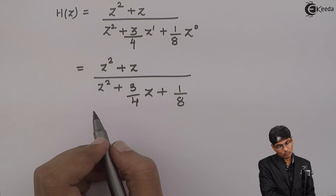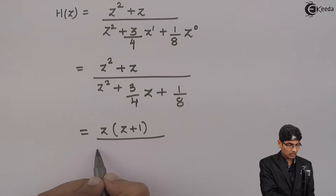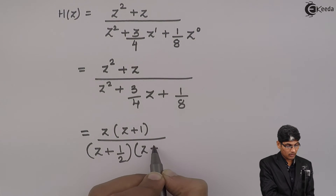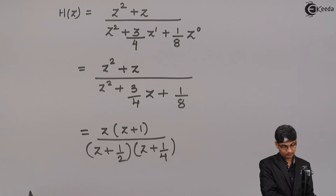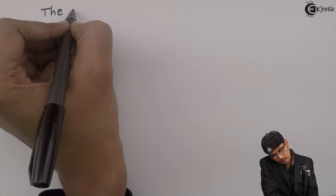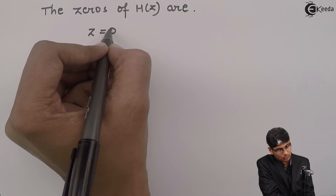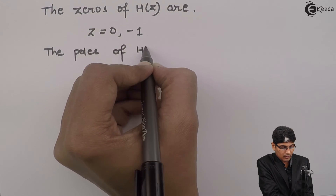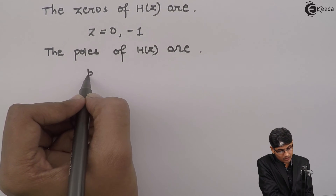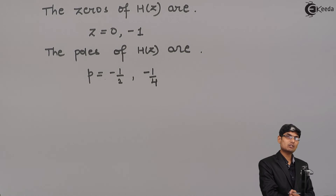To find the roots, I factor the numerator as Z(Z + 1), by taking Z common. Solving the denominator gives roots at (Z + 1/2) and (Z + 1/4). Therefore, the zeros of H(z) are Z = 0 and Z = -1, and the poles of H(z) are at Z = -1/2 and Z = -1/4, found by equating numerator and denominator to zero respectively.